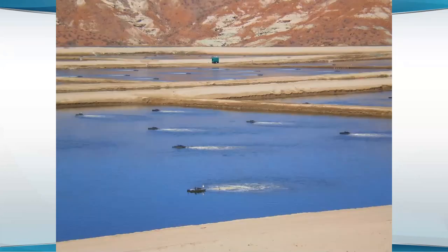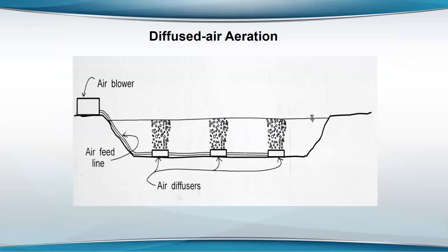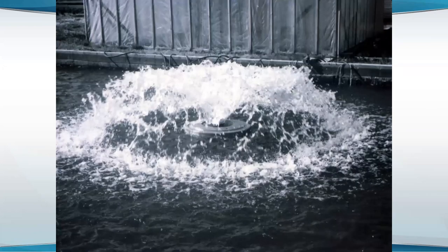Here are some of those aerators operating in shrimp ponds. With all aerators, the water is going at pretty good velocity right in front of them, but the farther out you go, the slower the water movement gets. An aerator that sends the water forward — like a paddle wheel aerator or a propeller aspirator pump — is much more efficient in a larger body of water.